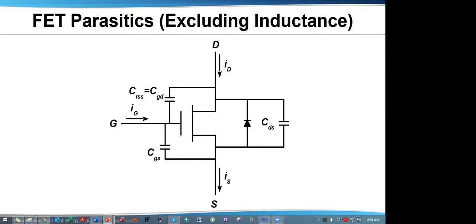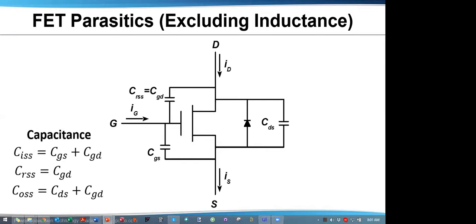Let's look at some typical FET parasitics. The dominant parasitics are capacitance. The capacitors are typically identified as CISS, CRSS, and COSS. They are often written in terms of gate-to-source capacitance CGS, gate-to-drain capacitance CGD, and drain-to-source capacitance CDS. We will also need to consider the parasitics of the body diode function, which has a forward voltage drop of VS2. Silicon MOSFETs have a body diode with minority carriers, which creates reverse recovery charge QRR.